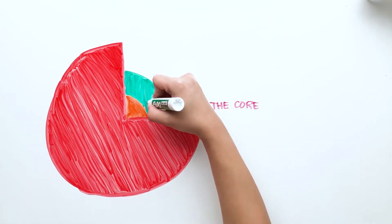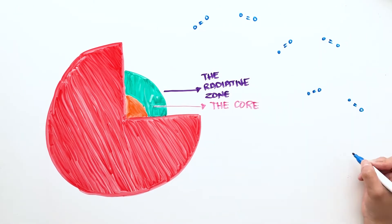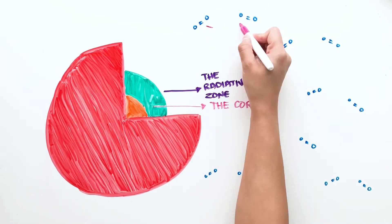From the core, the particles travel through the radiative zone where energy travels in the form of photons. They bounce from particle to particle, constantly being absorbed and re-emitted, taking over a million years for a photon to find its way out.